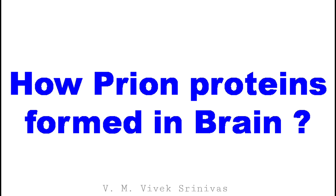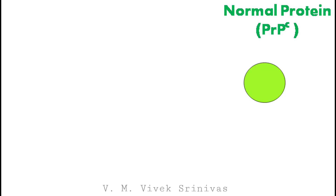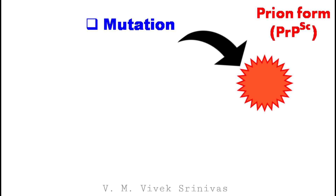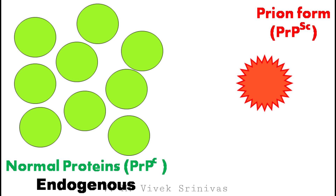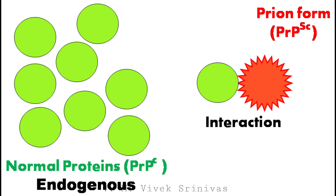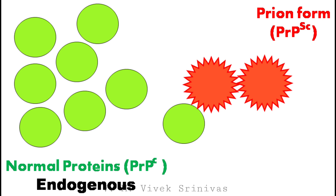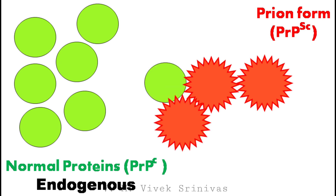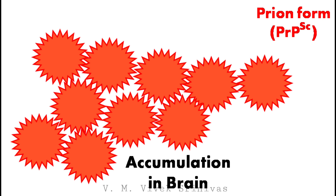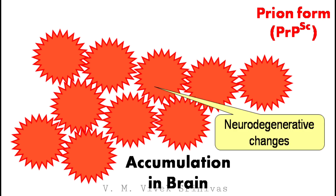How are these abnormal proteins formed in the brain? All mammals appear to have prion proteins in their normal form, but mutation of the prion protein gene may lead to a misfolded — that is, abnormally folded — protein. This abnormal protein is also acquired by ingestion of infected meat. These endogenous normal prion proteins are abundant in the brain and help in the intake of copper into neuronal cells. On interaction with an abnormally folded protein, normal prion proteins are converted to the abnormal scrapie form. Similarly, all normal prion proteins in the brain, on interaction with these abnormal folded proteins, are converted to abnormal forms, which accumulate in the brain. This accumulated abnormal protein causes neurodegenerative changes in the brain.